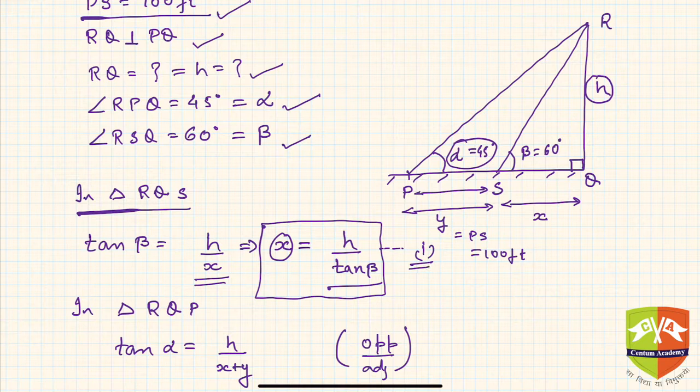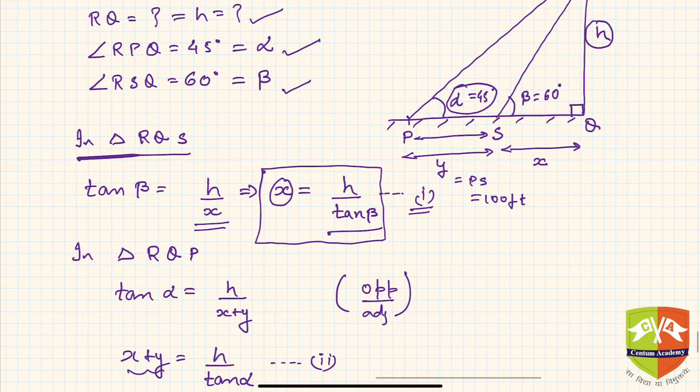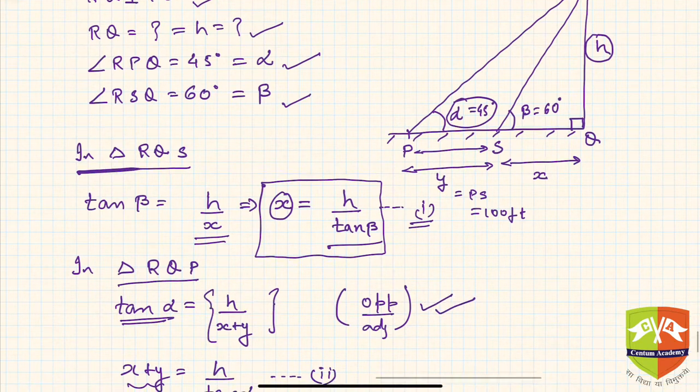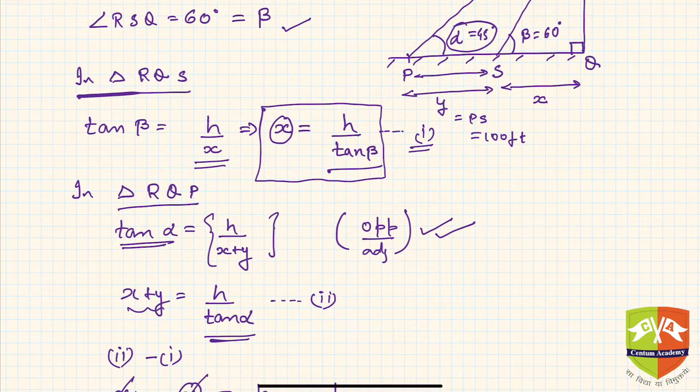Now come to the second triangle, that is RQP. Here also, tan α, which was given as 45 degrees, is h upon (x + y), opposite by adjacent. That means x + y can be written as h / tan α, and this is equation number two. You can rearrange to write x + y = h / tan α.